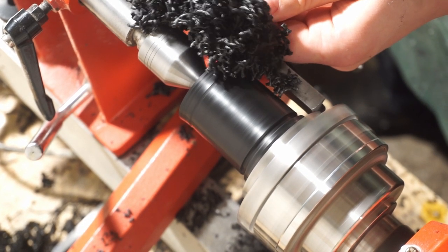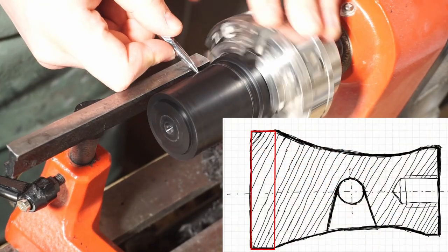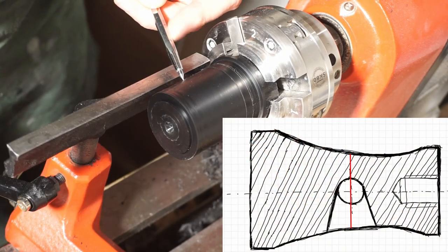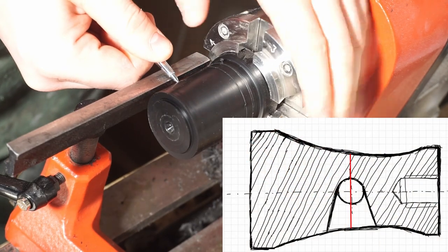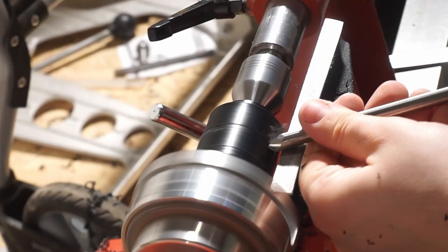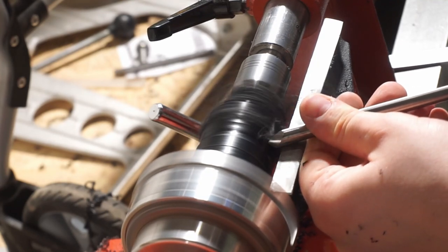With a blank in the right size I marked some crucial reference points. As they were the total length, the length of the first shoulder, the position of the smallest diameter and the length of the second shoulder. With these references I was able to bring the beater into its final form.